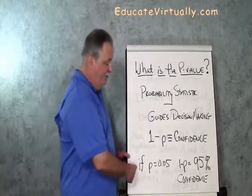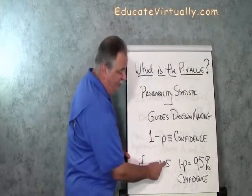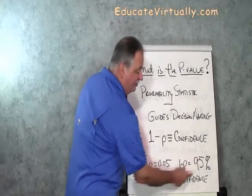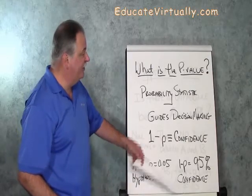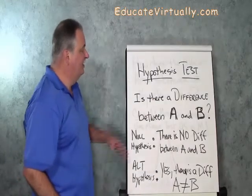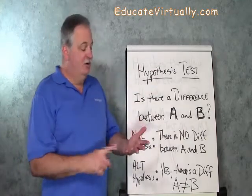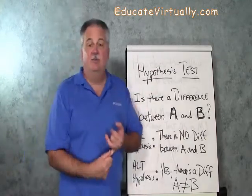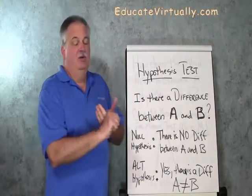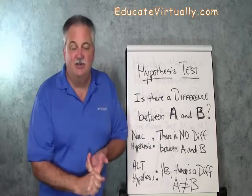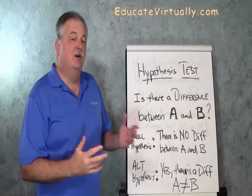So if I had a P-Value of 0.05, 1 minus 0.05 would be a 95% confidence. A hypothesis test is where we use the P-Value. We also use the P-Value in a design of experiments. We could be doing analysis of variance, a t-test, or multiple regression analysis. The P-Value helps us to understand if there is a difference or not.